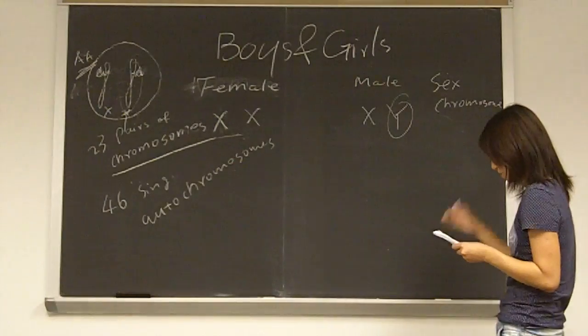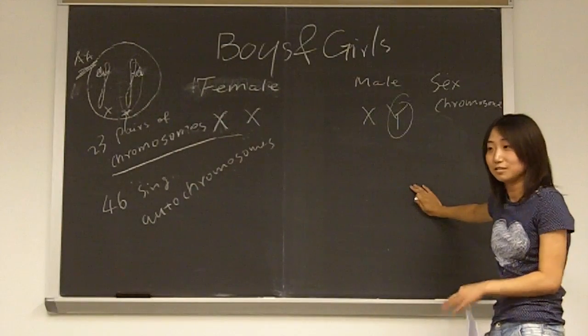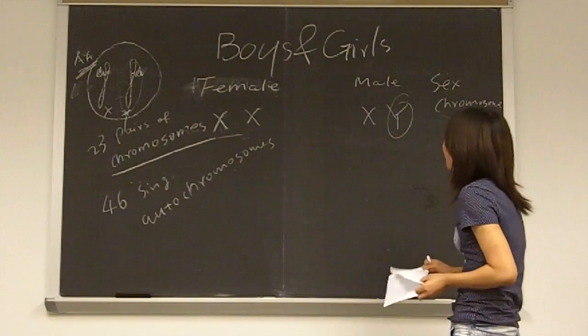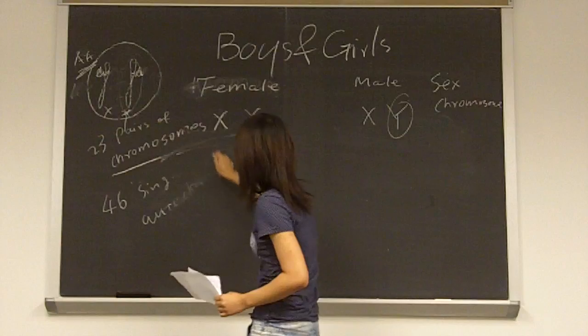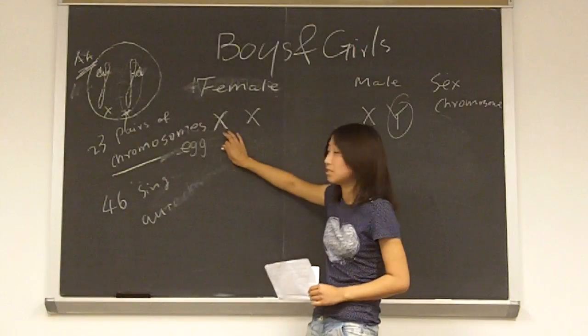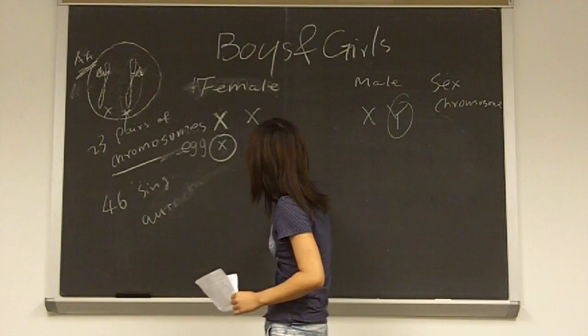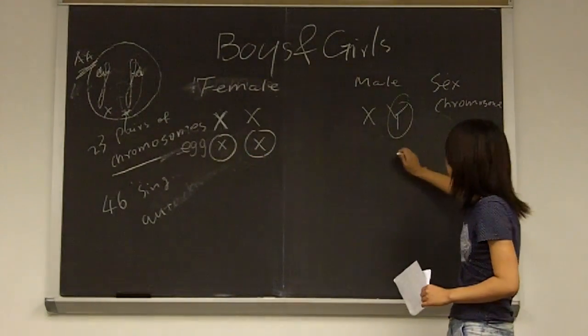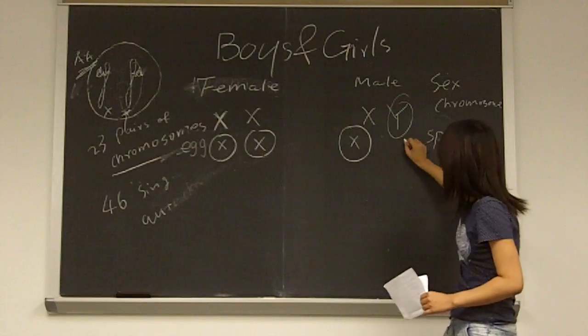So we will move to why some babies are girls and why some babies are boys. During the reproduction process, women will produce the egg. The egg contains the sex chromosome and they will separate, both have the X chromosome. And for men, they will produce sperm with X or Y chromosomes.